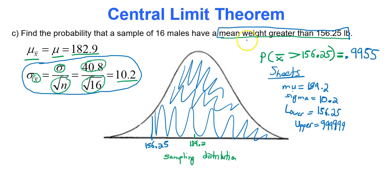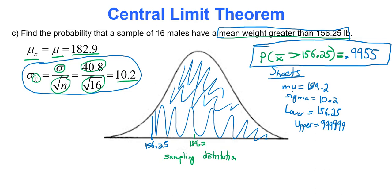So the probability that that elevator will be overloaded is actually 99.55 percent. Because the maximum capacity is 16 passengers with a weight threshold of 2,500 pounds, if 16 men get in there — the worst-case scenario — there's a 99.55 percent chance, or 0.9955 probability, that the elevator will be overloaded. So we need to call the elevator company and tell them to reconsider their safety guidelines. The power of statistics!